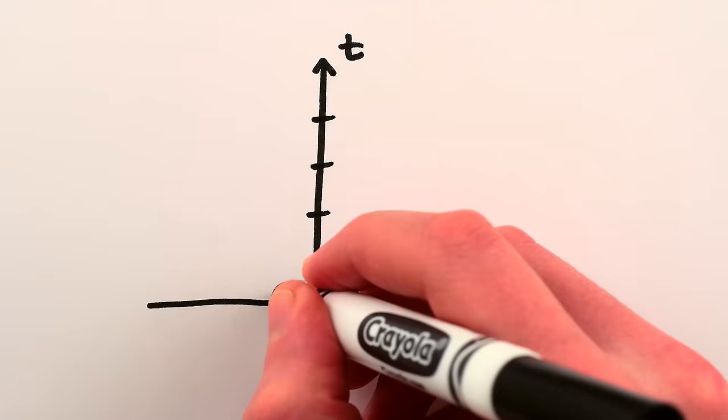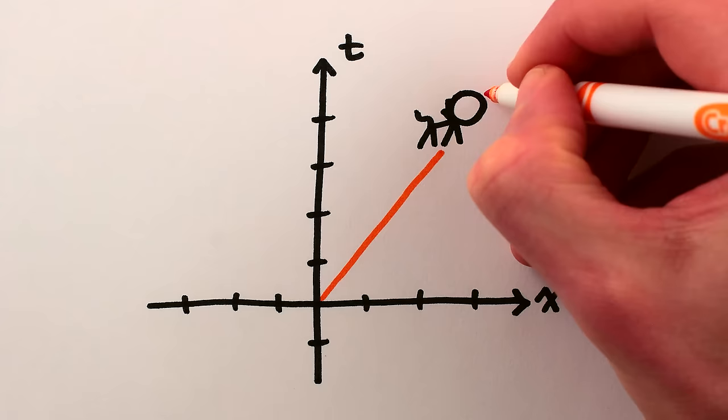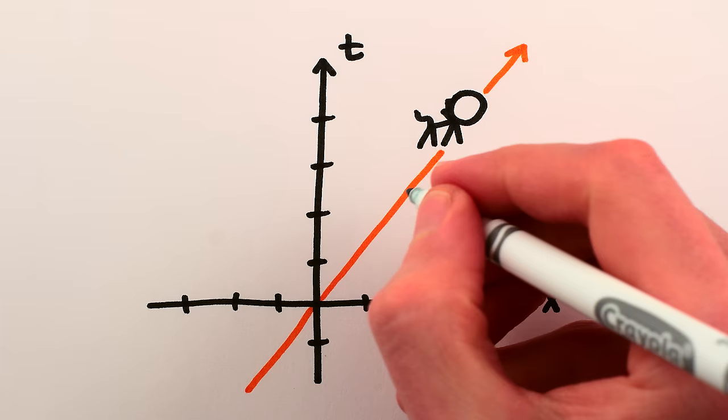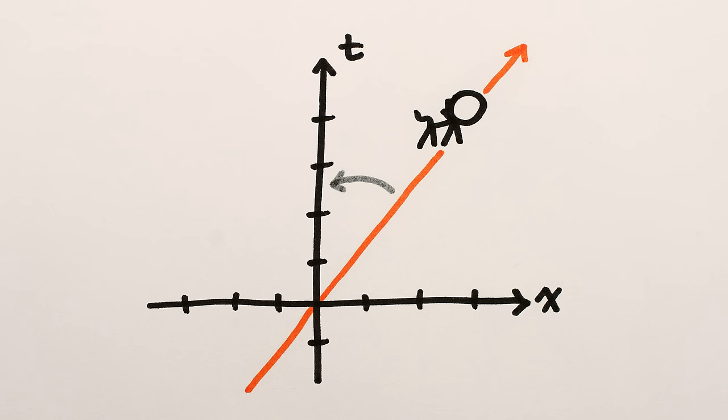With this in mind, to describe how things look from the perspective of a moving object, like this cat, we simply need some way to transform spacetime diagrams that makes the world line of the cat into a straight vertical line through x equals 0. Or in other words, we want to make the spacetime diagram into one where the cat's world line coincides with the time axis.